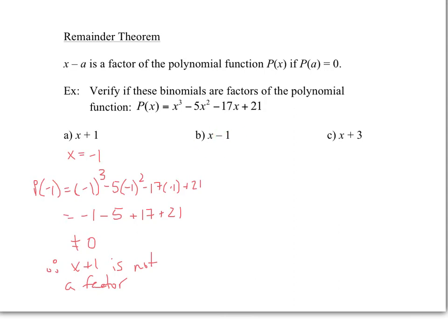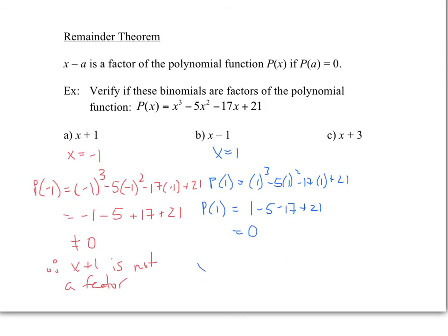Next, check if x minus 1 is a factor by plugging in x equals 1: 1 cubed minus 5 times 1 squared minus 17 times 1 plus 21. That gives 1 minus 5 minus 17 plus 21, which equals 0. Therefore x minus 1 is a factor.